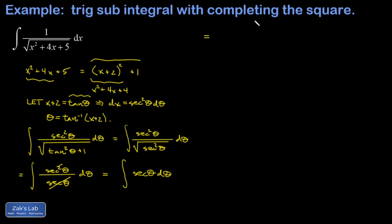Now this anti-derivative is just a standard formula you should have memorized, and I get the natural log of the absolute value of secant theta plus tangent theta plus an arbitrary constant c. Now if I go back and plug in the definition of theta, I have the natural log of the absolute value of the secant of the inverse tangent, or the angle whose tangent is x plus 2, plus the tangent of the angle whose tangent is x plus 2.